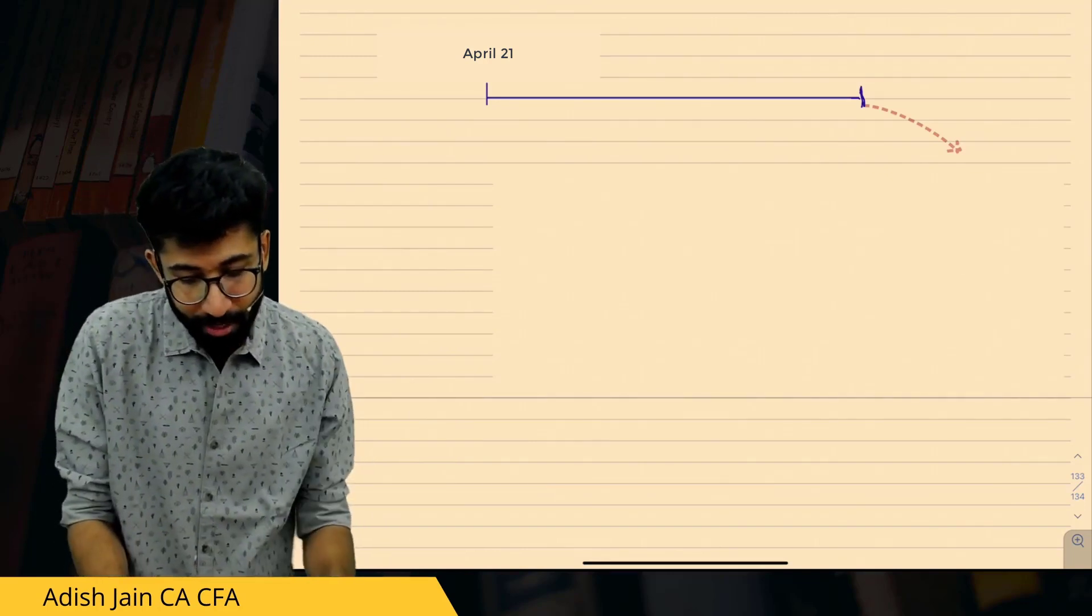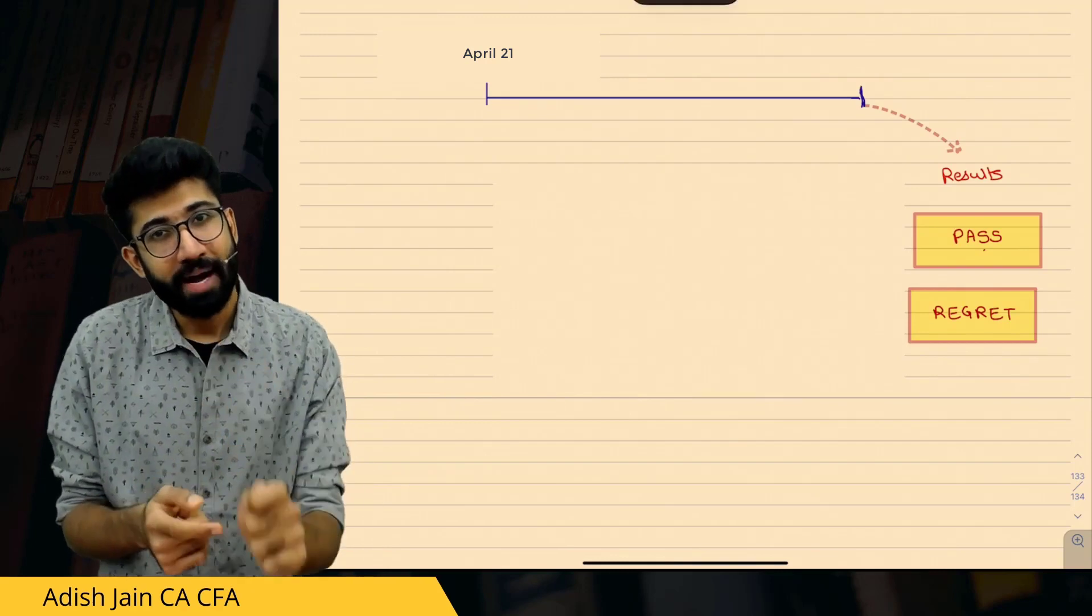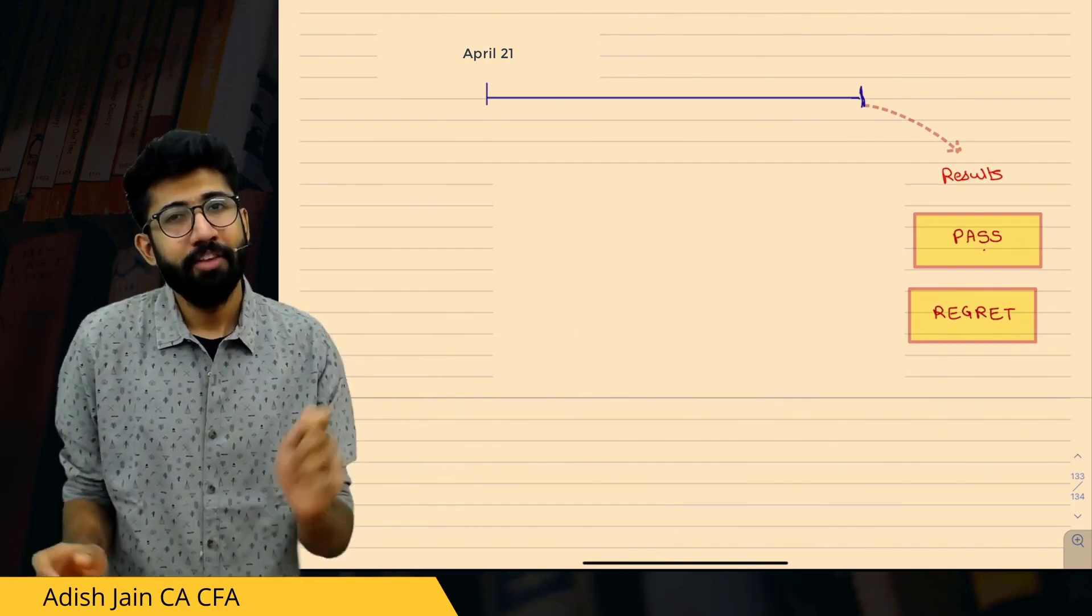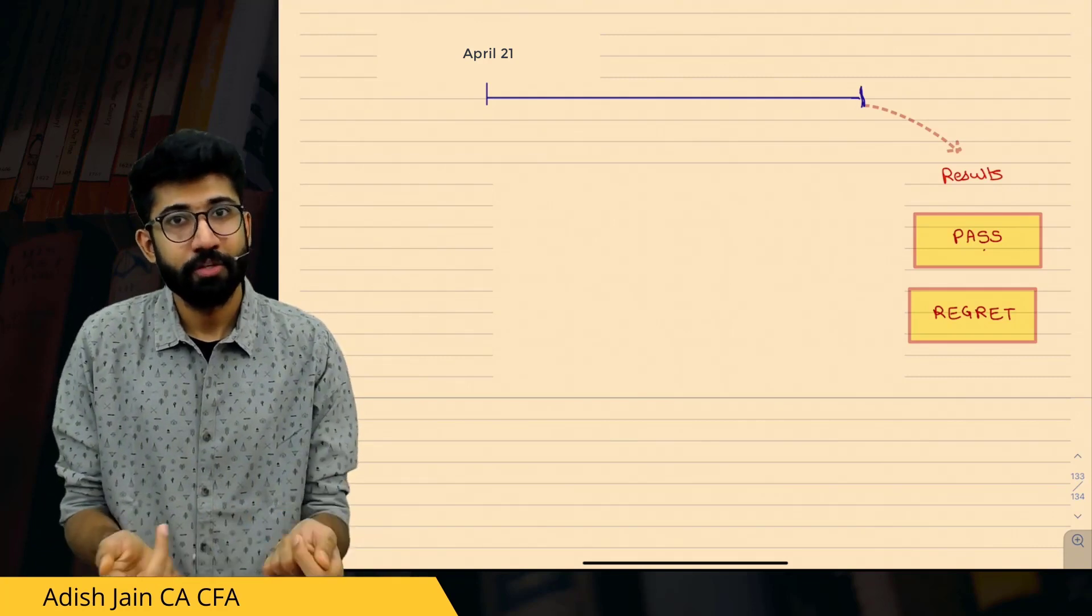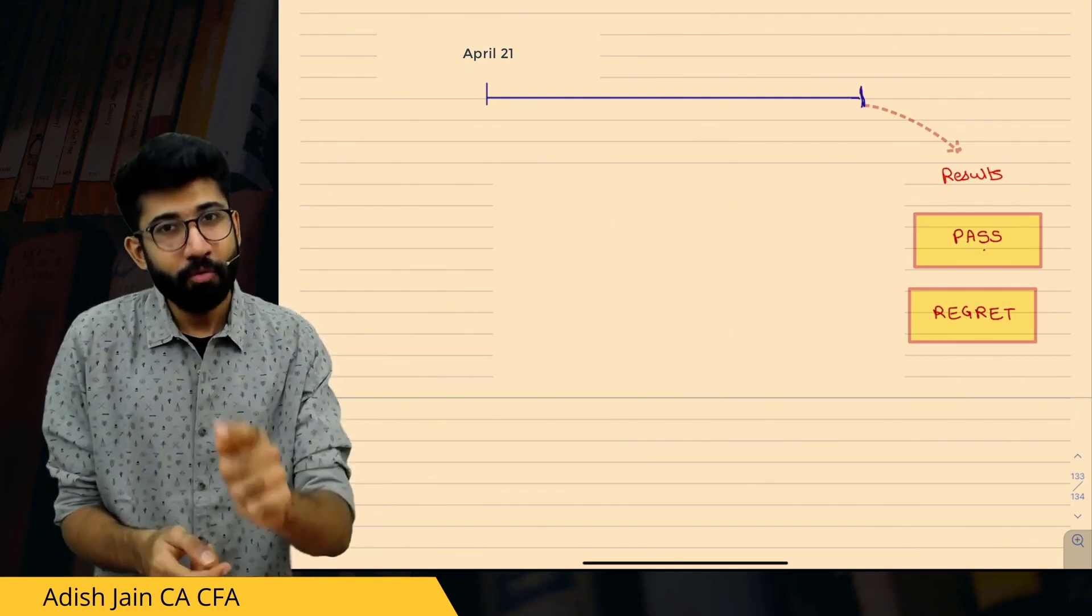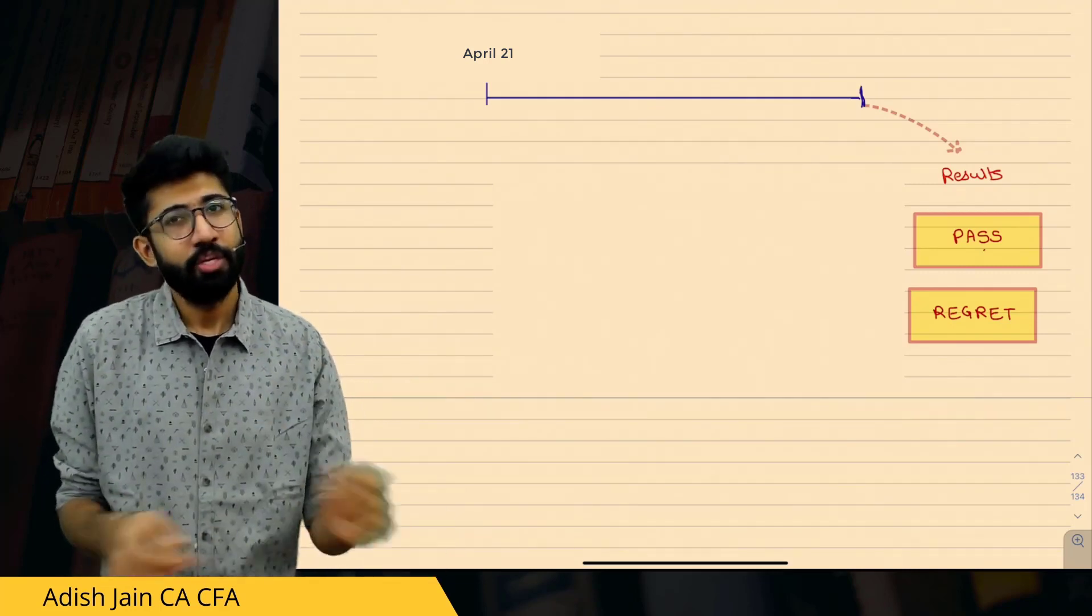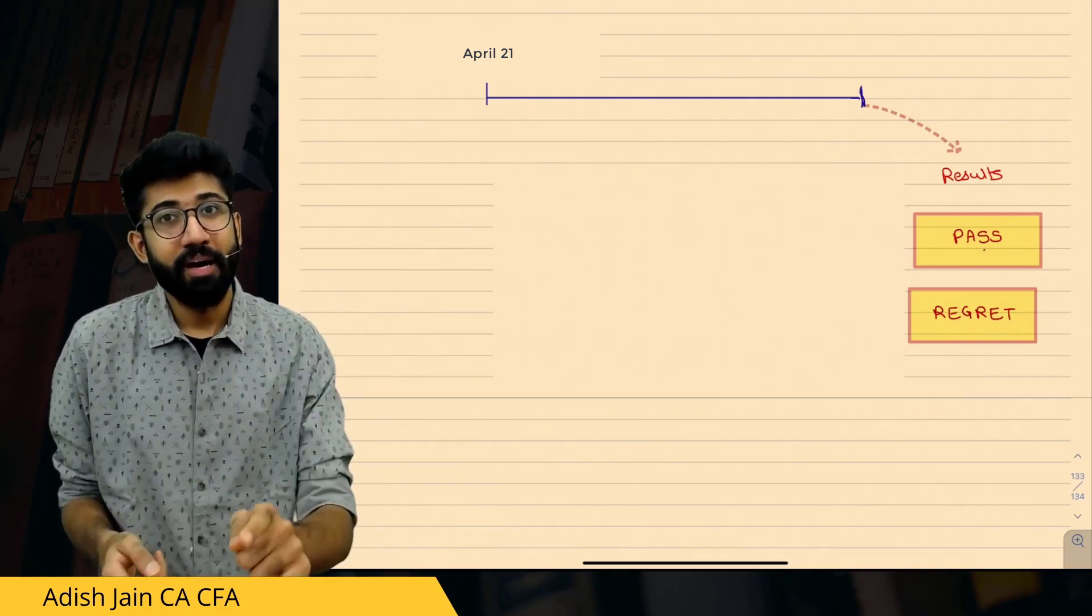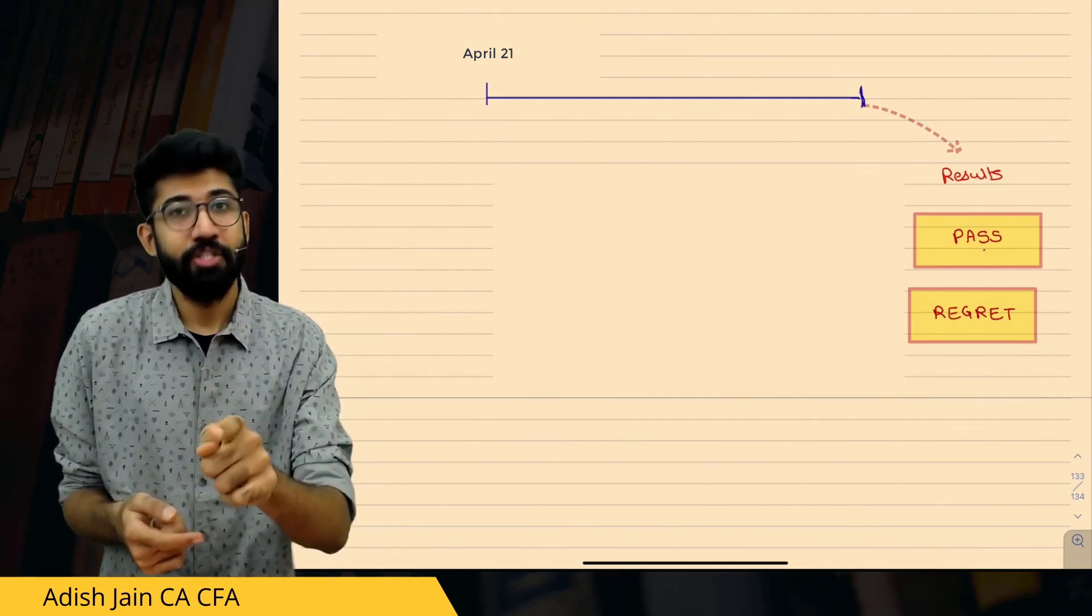Friends, either you will pass on the result date, or you will regret. Given a choice, if I ask you, what will you choose? The obvious answer would be to pass. But the worst part, you know what is the worst part? We never had a choice to choose the result, you never had a choice. But the best part is, you always had this choice to choose the efforts you can make.